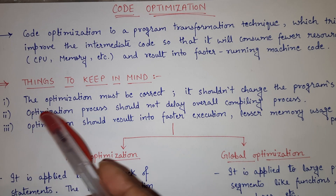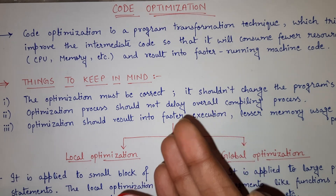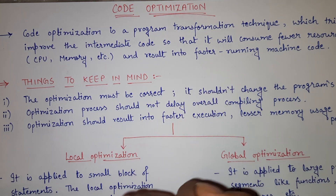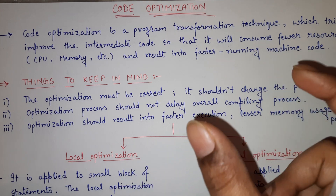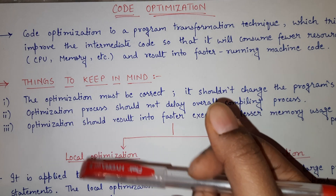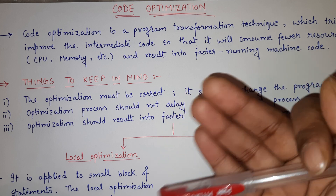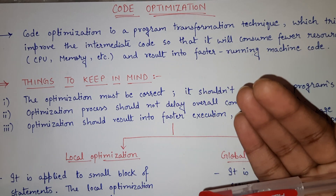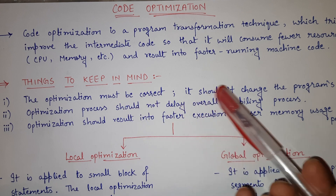The first one is: the optimization must be correct — it should not change the program's meaning. We want to optimize our code and change it in such a way that it is more efficient. But we should always keep in mind that while optimizing, the program's meaning should not change. Whatever the program was doing, whatever output you used to get — those things should not change. We don't want to optimize code at the cost of changing it. The input, output, and main aim of the program should remain the same, but the program should work a little more efficiently.